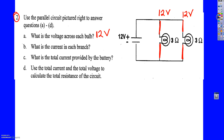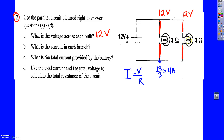What is the current in each branch? To find current, I have to use Ohm's law: I equals V over R. So if I do that here, 12 divided by 3 is equal to 4 amps. Now if I do it here, it's also the same thing — 12 divided by 3 is 4 amps.